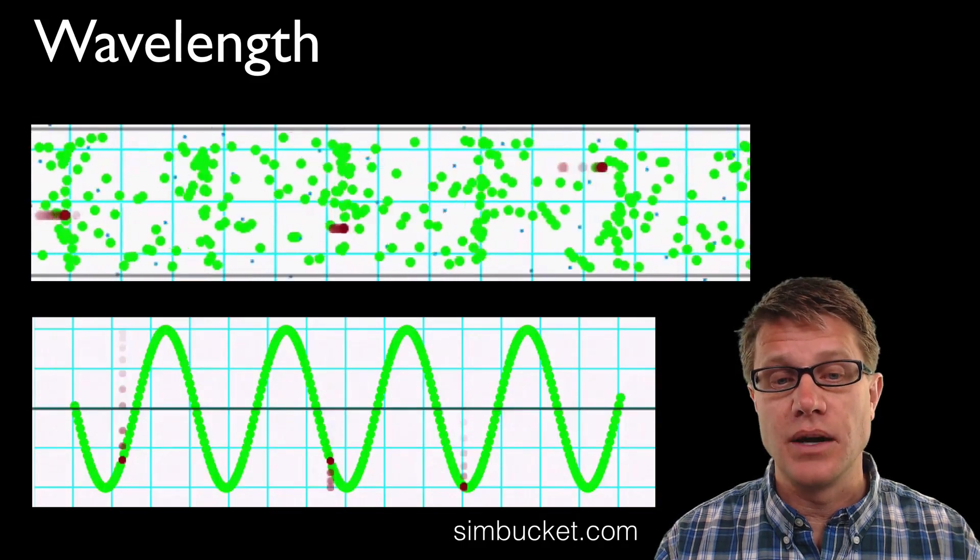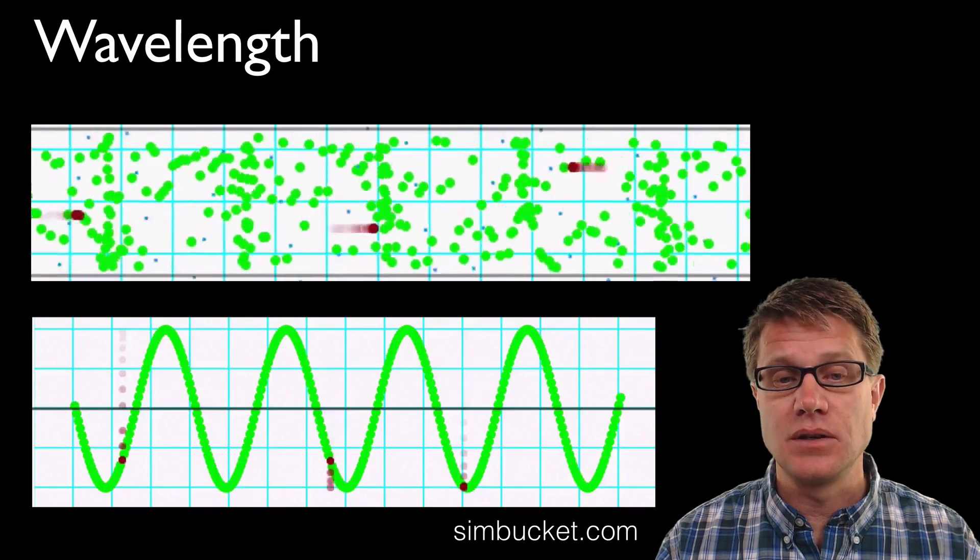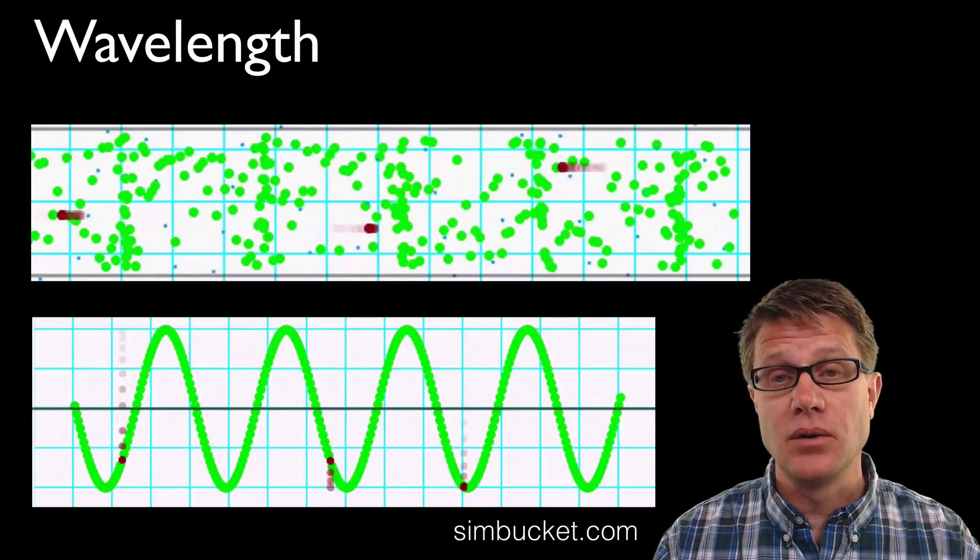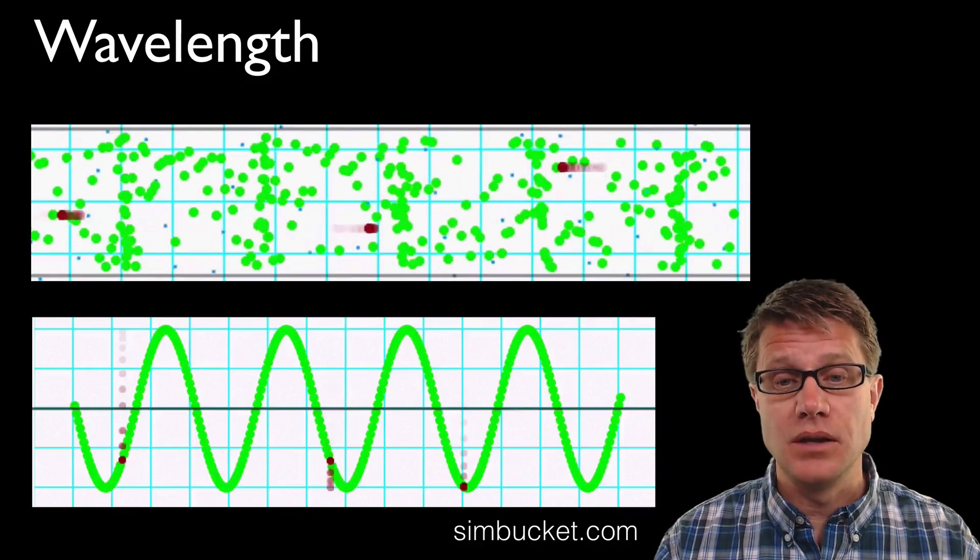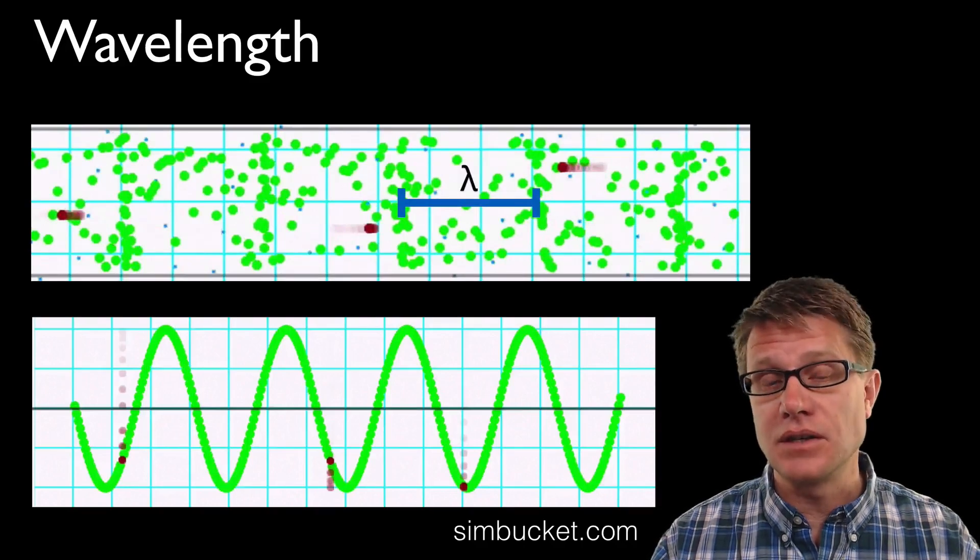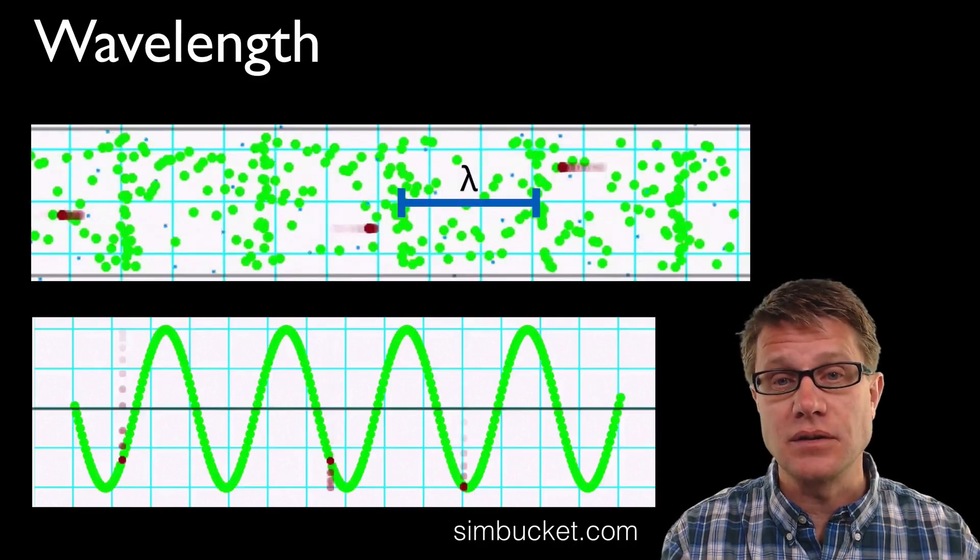If we look at longitudinal waves in this Simbucket simulation, you can see the oscillations in the direction of the movement of the wave. Where would one wavelength be if you were to hold your fingers up to the screen? It's going to be like that. It's the distance between those compressions.